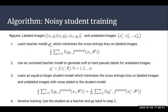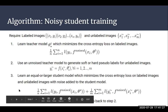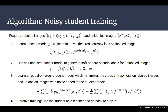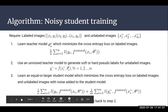This is the algorithm explained in the paper for noisy student training. The requirements are labeled images and unlabeled images. First, train the teacher model by minimizing cross-entropy loss on the labeled images. Then use the un-noised teacher model to generate soft or hard pseudo labels for the unlabeled images. After that, train the student model — which is equal to or larger than the teacher — minimizing cross-entropy loss on both the labeled and unlabeled images, with noise added to the student. Then make that student the new teacher and repeat the process until convergence or all iterations are complete.